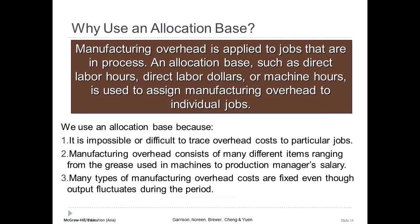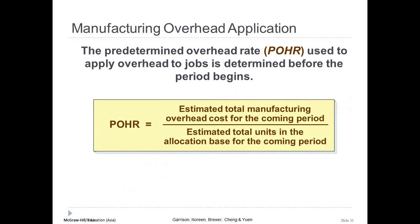Manufacturing overhead includes many different costs that are difficult to gather in time to charge to a particular job — the job may be complete and sold before actual overhead costs are determined. Also, many types of overhead are fixed in nature even though output fluctuates. To facilitate allocation, we calculate a predetermined overhead rate (POHR) before the period begins, dividing total estimated manufacturing overhead for the coming period by the total estimated units of the allocation base.